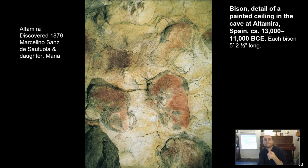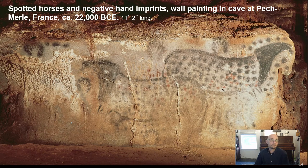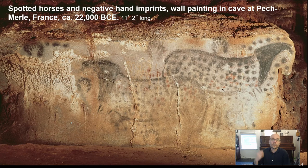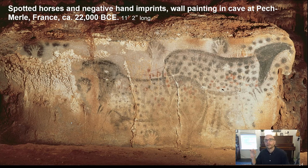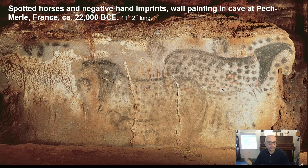After Altamira was legitimized and the discovery certified, more and more caves were discovered throughout Europe. Some of them were quite old, like Pech Merle, which is interesting because it contains human imagery — which is rare in these early cave paintings. Most early cave art is typically of animals, with a smaller percentage of abstract shapes like lines and circles and geometric forms, and then a very small percentage being images of humans.